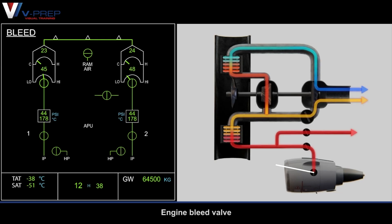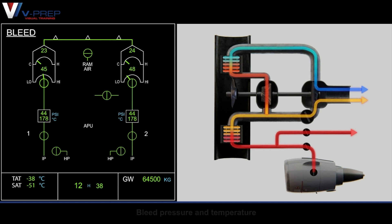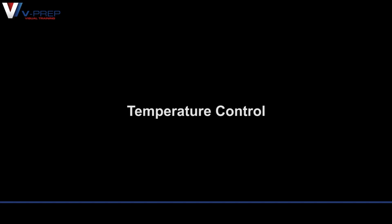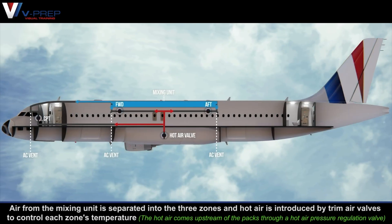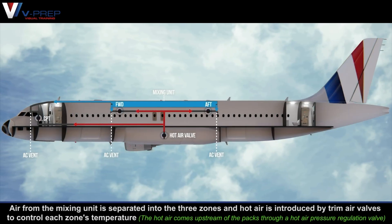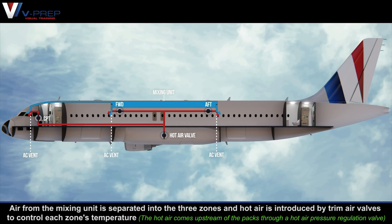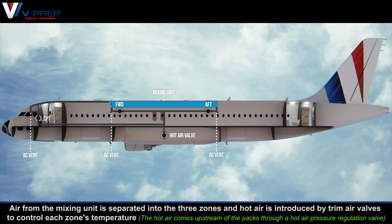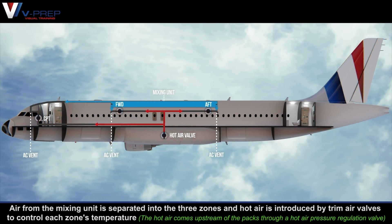Pack indications and engine bleed valve. Bleed pressure and temperature are monitored for temperature control. Air from the mixing unit is separated into three zones, and hot air is introduced by trim air valves to control each zone's temperature.